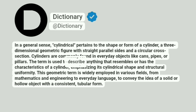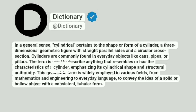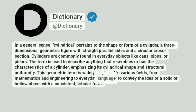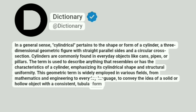The term is used to describe anything that resembles or has the characteristics of a cylinder, emphasizing its cylindrical shape and structural uniformity. This geometric term is widely employed in various fields, from mathematics and engineering to everyday language, to convey the idea of a solid or hollow object with a consistent, tubular form.